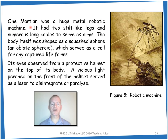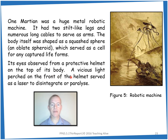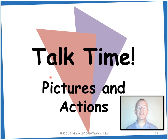Let's have a read. So: one Martian was a huge metal robotic machine. It had two stilt-like legs and numerous long cables to serve as arms. The body itself was shaped as a squashed sphere — that's an oblate spheroid — which served as a cell for any captured life forms. Its eyes observed from a protective helmet on the top of its body. A vicious light perched on the front of the helmet served as a laser to disintegrate or paralyze.